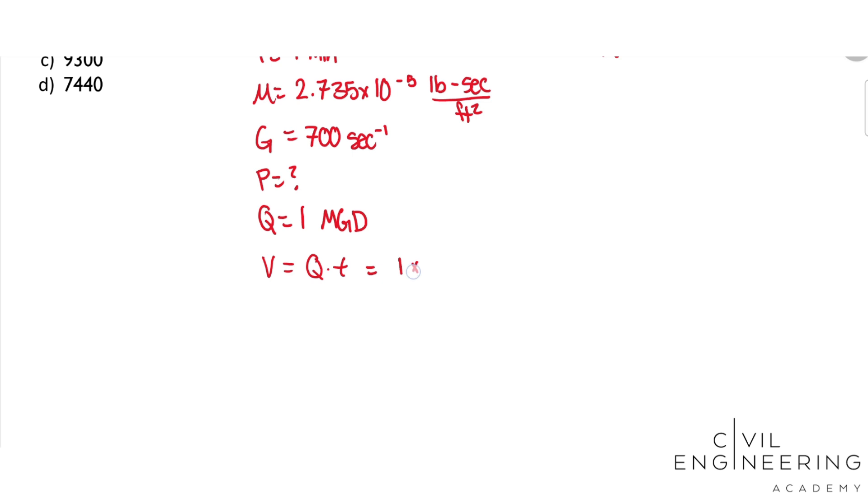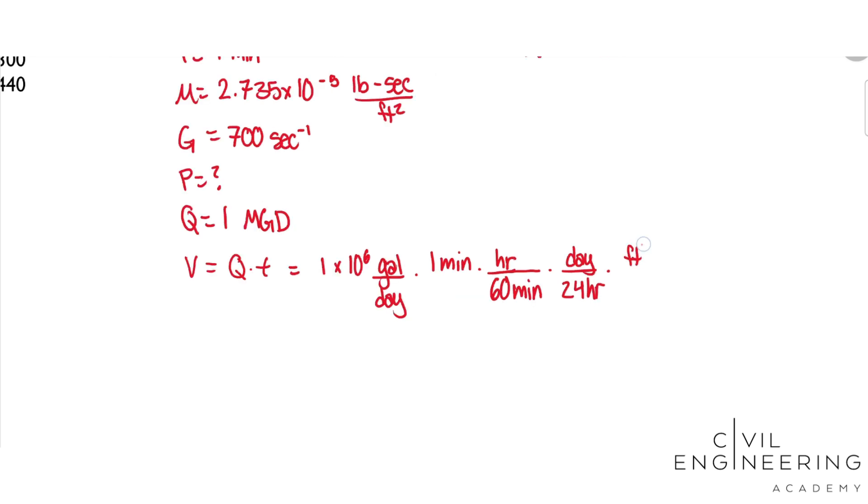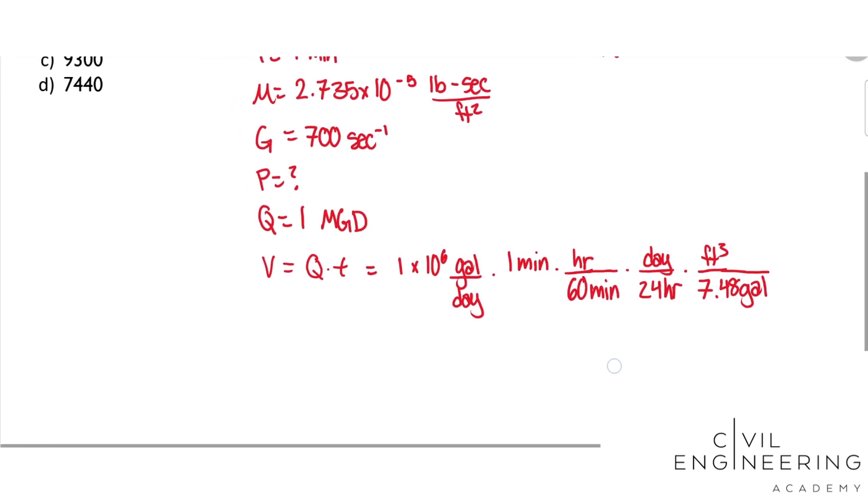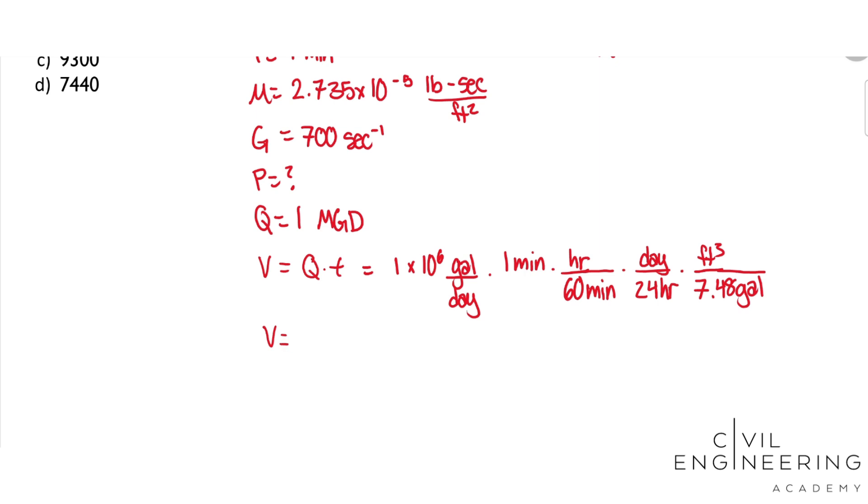So let's do that. We got 1 times 10 to the 6 gallons per day, times 1 minute, and we're going to need to cancel all those units out. So we got 60 minutes per hour, and we got 24 hours per day. And then we also are going to need to convert this gallons to feet cubed. Feet cubed over 7.48 gallons, and this just comes right out of your 1.2 conversion factors. And then our total volume for that detention time and the flow is going to be 92.84 feet cubed.